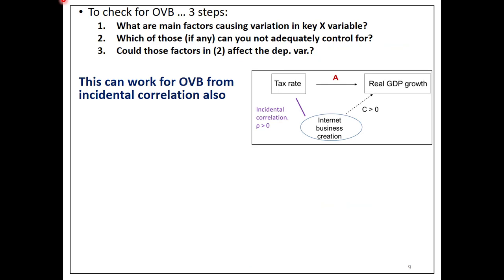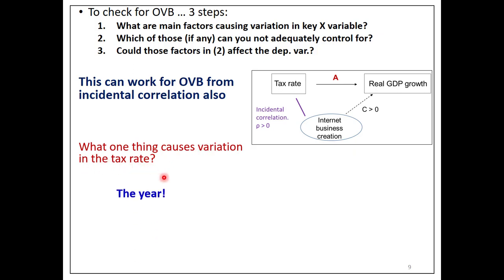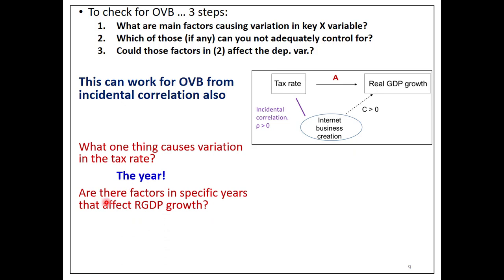This method of checking for OVB also works for incidental correlation. In the tax rate and real GDP growth example, the main thing causing variation in the tax rate is the year — every year there's a different tax rate. The question then is: are there factors in specific years that affect real GDP growth? Of course there are. With a time series model like this, you really can't control for the year because controlling for the year would control for what the tax rate is every single year. So when you estimate something like this, there's certainly going to be omitted variables bias.